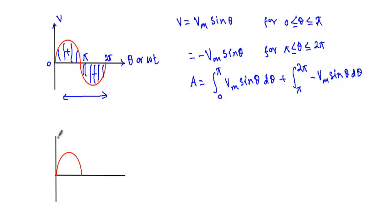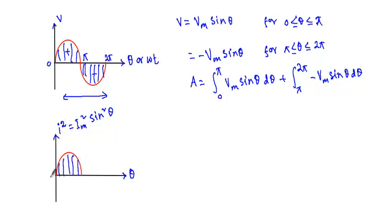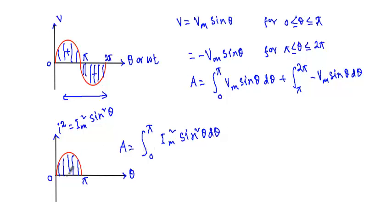For a waveform representing I squared, where the current equation is given by Im² sin²(θ), we calculate the area by integrating I² within the interval 0 to π. The area A equals the integration of Im² sin²(θ) dθ from 0 to π. Using this formula we can calculate the area under the Im² sin²(θ) waveform.